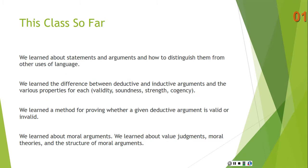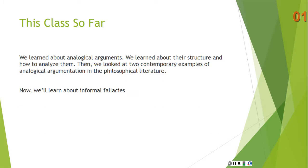In the first section of the course we learned about statements and arguments and how to distinguish them from other uses of language. Then we learned the difference between deductive and inductive arguments and the various properties for each, such as validity, soundness, strength, and cogency. We also learned a method for proving whether a given deductive argument is valid or invalid: the truth table method. We learned about moral arguments, value judgments, moral theories, and the structure of moral arguments. And finally, we learned about analogical arguments — their structure, how to analyze them, and two contemporary examples of analogical argumentation in the philosophical literature.